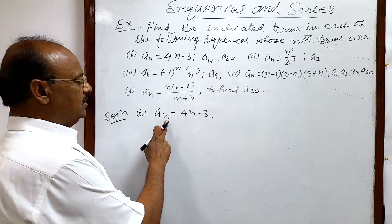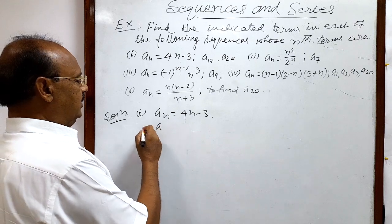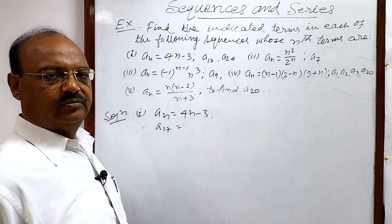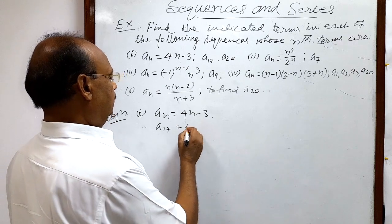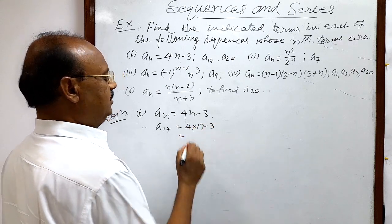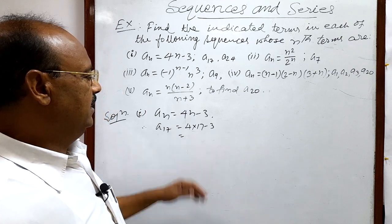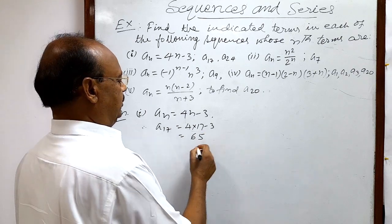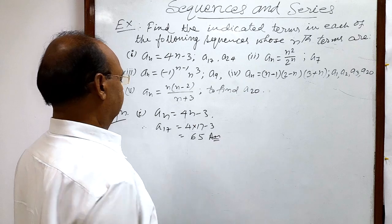So if we replace this n by 17, we will get a17. Very simple. So here 4 into 17 minus 3 is equal to how much? We can solve it very easily. 65 is the answer.